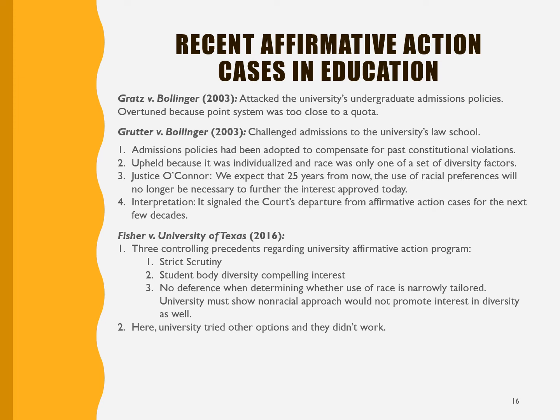Justice O'Connor, who was at the center of the court for much of the time she was there, very importantly wrote that she expected that within 25 years, the use of racial preferences would no longer be necessary to further the interests approved. She was saying she thought they were necessary, and only because they were necessary were they allowed. So it signaled that the court was going to not revisit affirmative action in the short run, but that at a time in the future, they would have a much more negative opinion toward affirmative action.